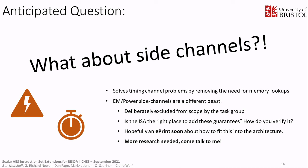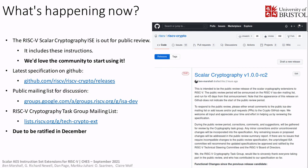We need more research on side channels, so please come and talk to us — the RISC-V security and cryptography community is really interested in this. In terms of what's actually happening now: the RISC-V Scalar Cryptography ISC is out for public review, and it includes these instructions. The actual instruction set extension includes not just AES instructions but also SM3, SM4, SHA-2, and a bunch of other more generic instructions for accelerating cryptography.